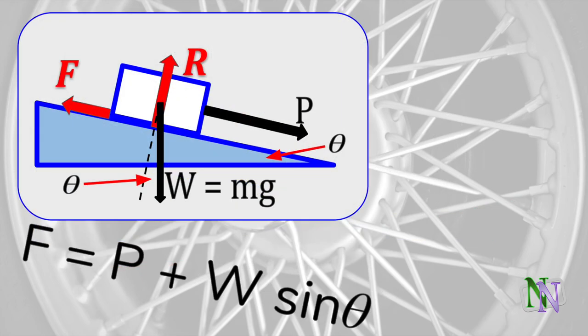As you can see here, the forces parallel to the slope are F, P, and the component of the weight acting down the slope. This is the equation written at the appropriate angle.